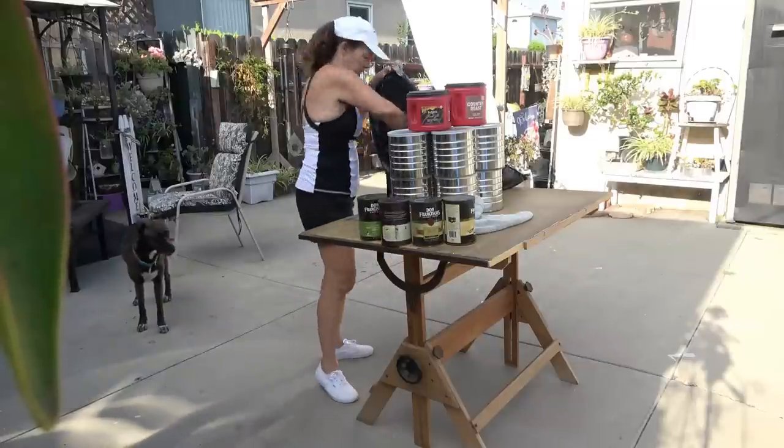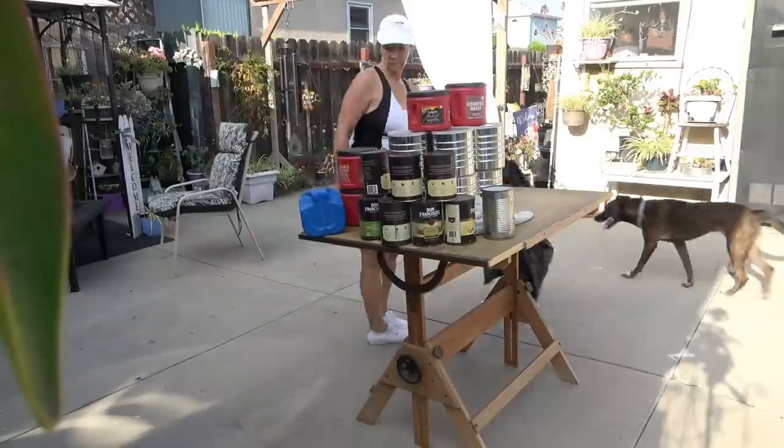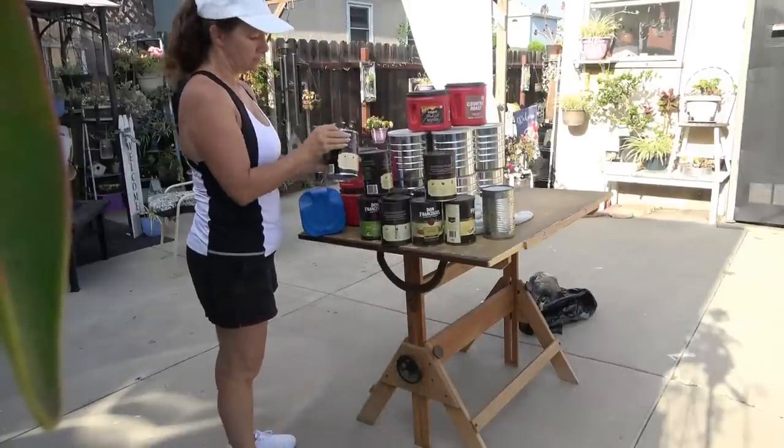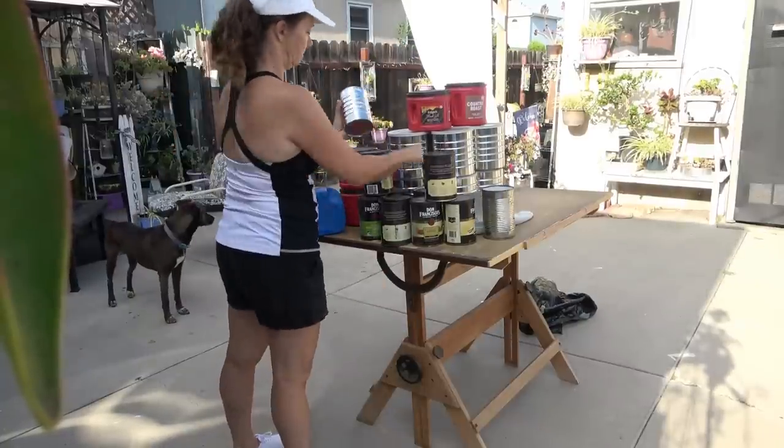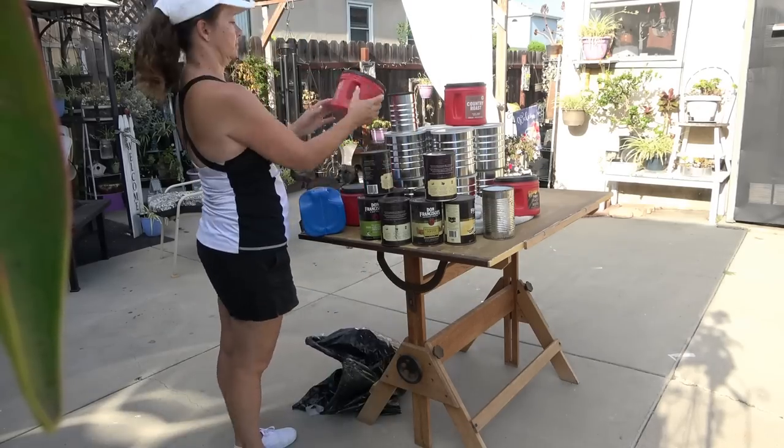So I put out a plea to my local Facebook marketplace saying does anybody have empty cans that they wouldn't mind giving to me, and I got a ton. What this allowed me to do was play around with shapes, see if there were different sizes I wanted to play with. I found that the plastic Folgers cans for me were the best because they came in different sizes, but they had the best seal and I was thinking about using these for real food.